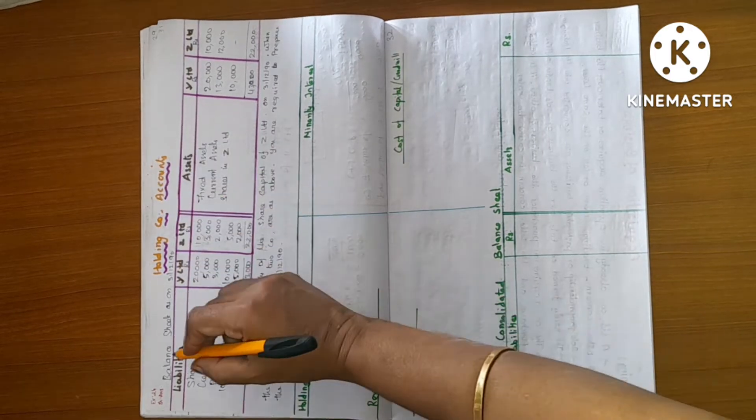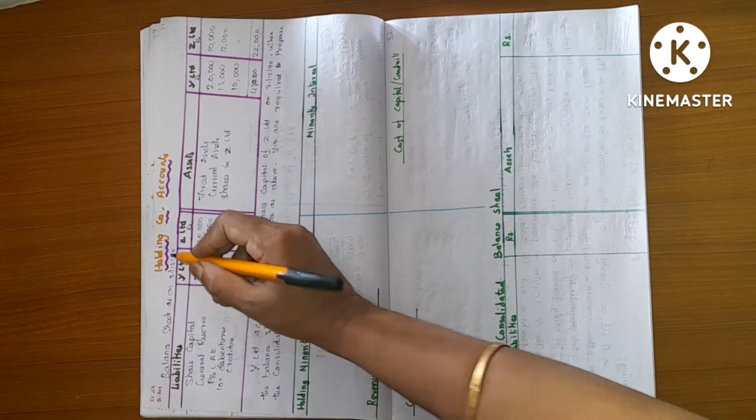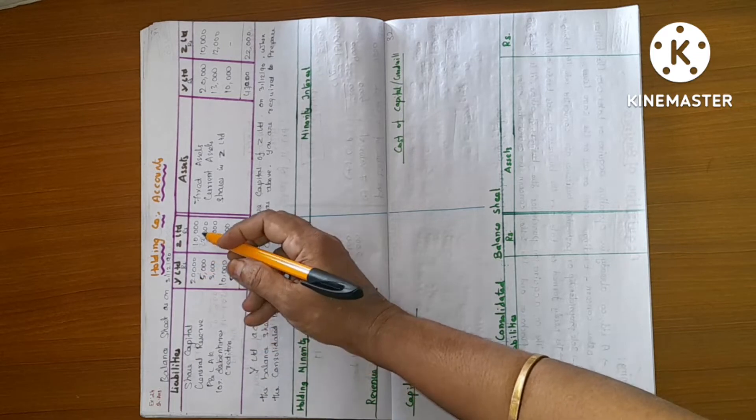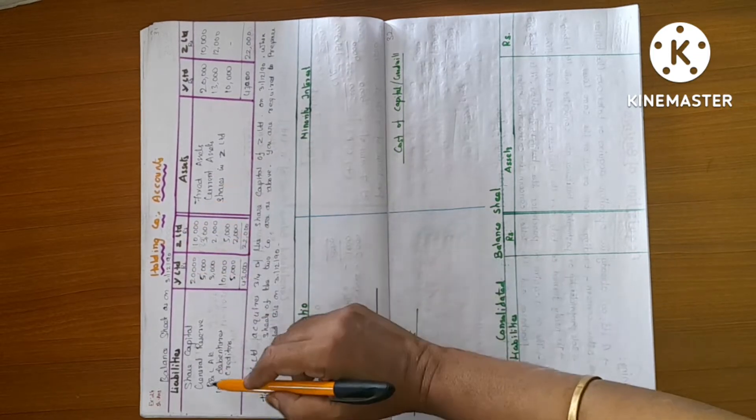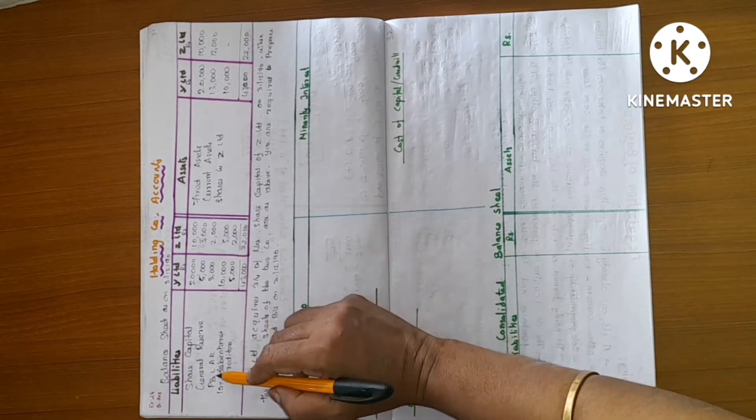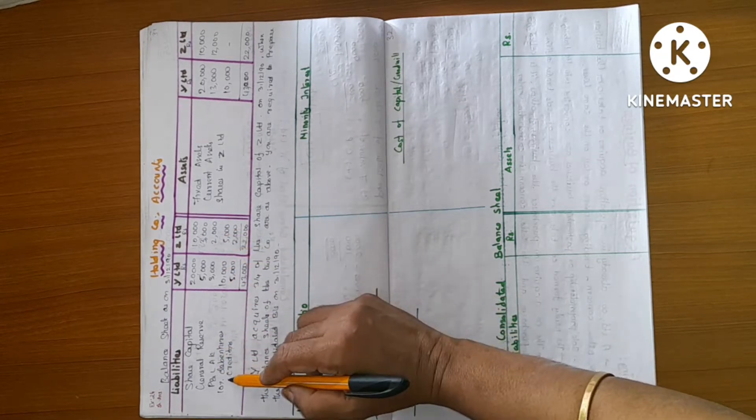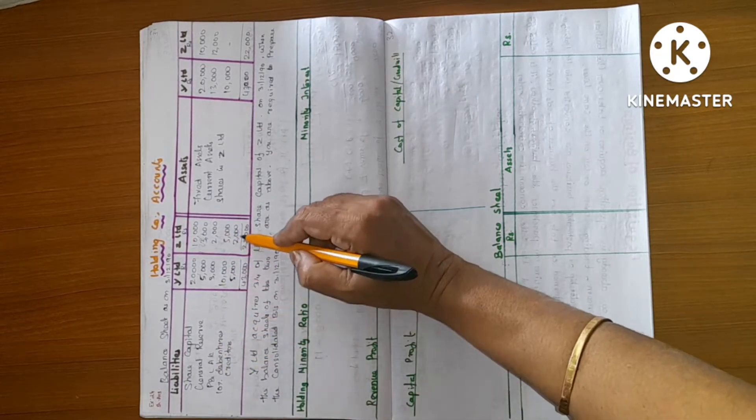Holding company accounts. Balance sheet of air zone, 31st 1290. Share capital 210,000. Y Limited, Z Limited. General Reserve 5,000, 3,000. Profit and loss 3,000, 2,000. 10% debenture 10,500. Creditors 5,000, 2,000.